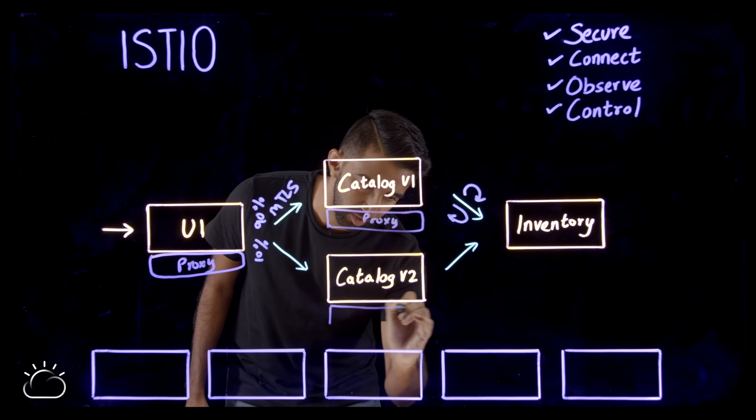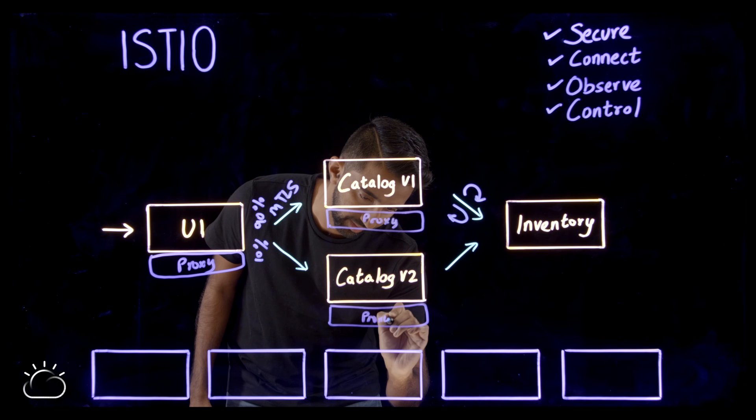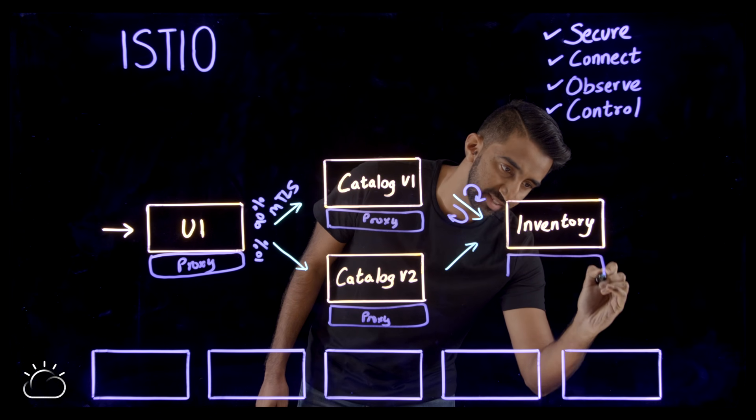And the proxy itself runs in a container next to your application container, but it runs inside the same Kubernetes pod.